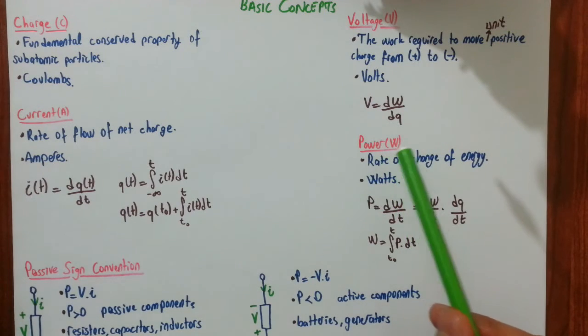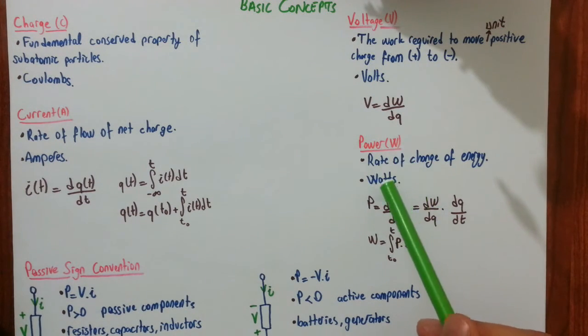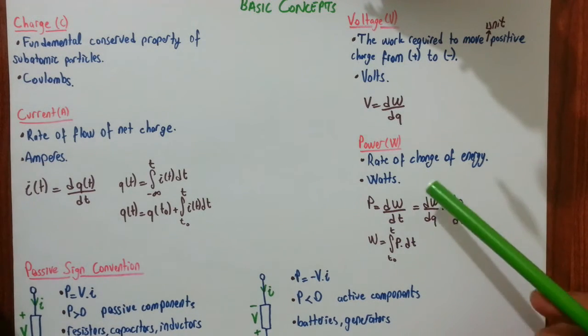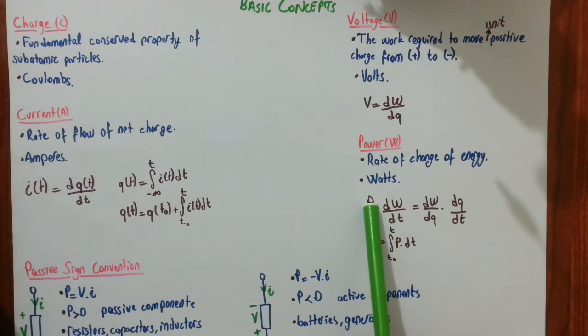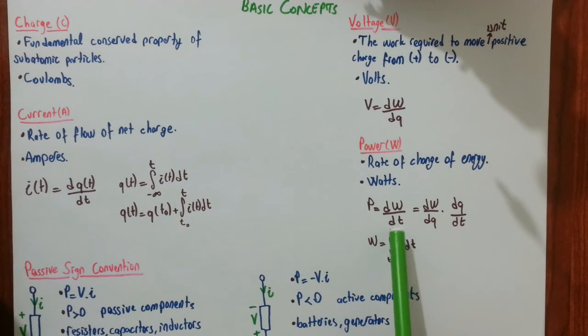Let's move on to the power. Power is denoted by W and measured in watts. It's the rate of change of energy. And here we can see the formula. Power is the time derivative of the energy.